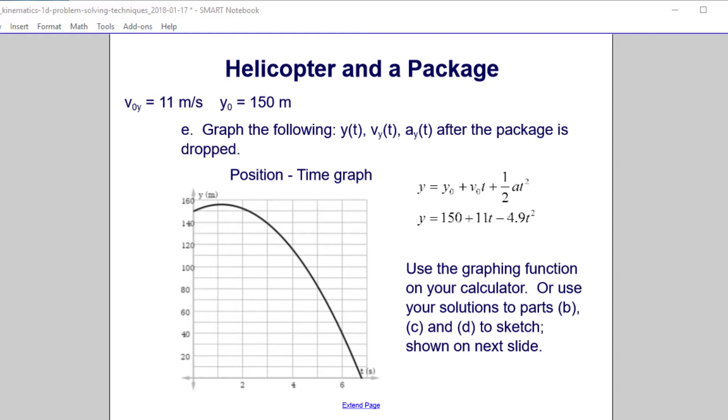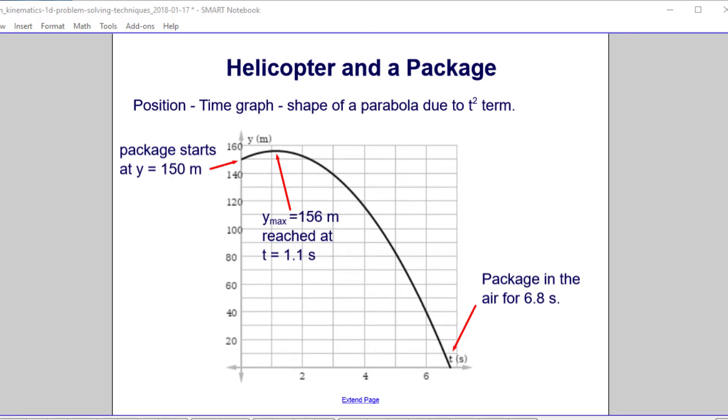So you can either use the graphing function on your calculator, or what I did, I used this online website called graphfree.com, which is pretty cool, and it graphed that for me. But we're going to show you, here's the equation, this is what I graphed, just put that, and it gave me this nice graph over here. And it kind of checks with what we said. The package would keep rising after it was dropped out of the helicopter, and then it's just freefall, which is a parabola. But let's look at the next slide to show how you could do it if you didn't use a calculator or graphing software. We know it's going to be a parabola because of the t-squared term in the equation, and also because we know it's in freefall, so that's t-squared. We know that from previous work. And let's start sketching.